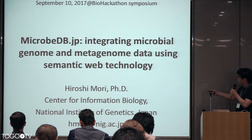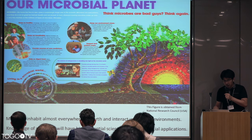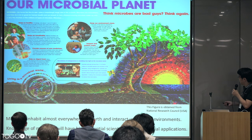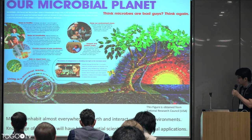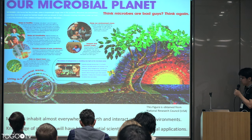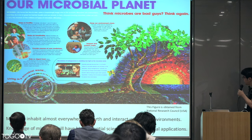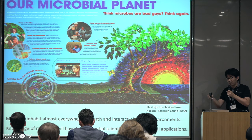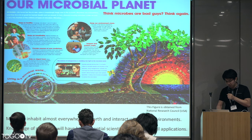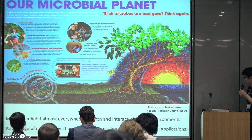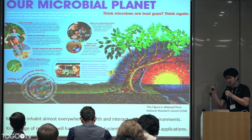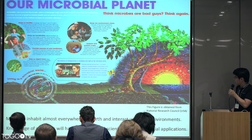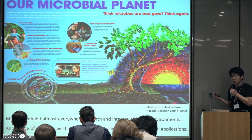Our database is called MicrobeDB.jp. As Pierre already described, our planet Earth consists of many, many microbes. They are almost everywhere on Earth and interact with the environment — for example, our skin, our gut, and even your laptops and keyboards. But we cannot see them because they are too tiny. We can analyze these microbes using metagenomic or genomic techniques.